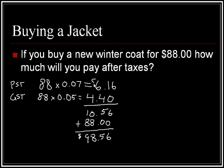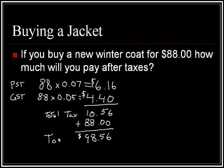So your steps are: figure out your PST, figure out your GST, add them together to find the total tax, add the original price, and you get your grand total. We can do the same basic thing if you're dealing with other types of percentage additions.